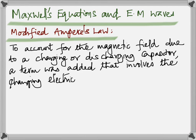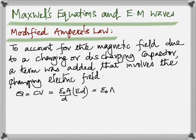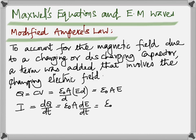To derive that new term: Q equals C times voltage, and capacitance is ε₀A/d. Voltage can be written as electric intensity times distance, so substituting and cancelling d, you get Q equals ε₀A times E. Since current I equals dQ/dt, taking the differential with respect to time gives ε₀A times dE/dt. Since E times A is the electric flux Φ_E, this becomes ε₀ dΦ_E/dt — the new term Maxwell introduced.